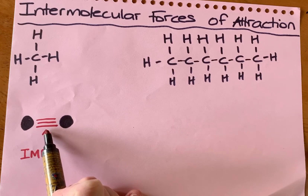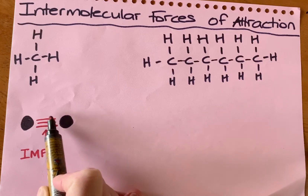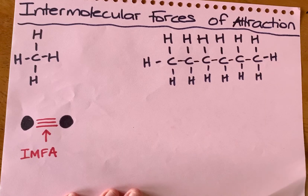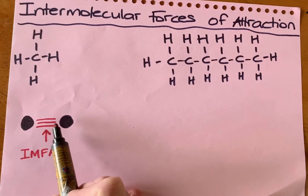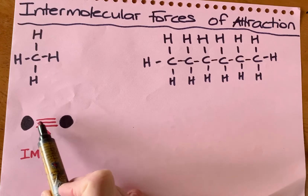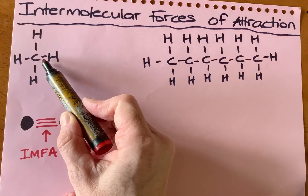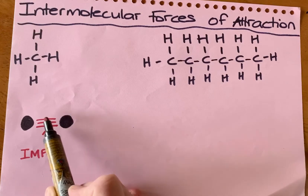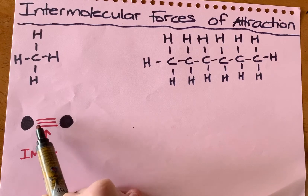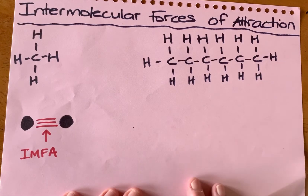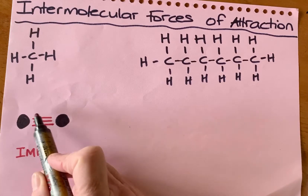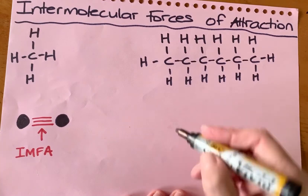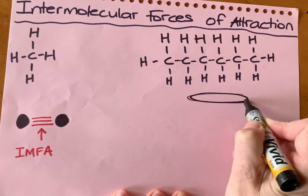The energy required to break those intermolecular forces of attraction is the latent heat, where you get the liquid changing to the gas. During a melting point, these forces weaken slightly. The covalent bonds happen within a molecule, whereas the intermolecular forces of attraction happen between molecules — and that's what we're talking about when we discuss a boiling point or a melting point.